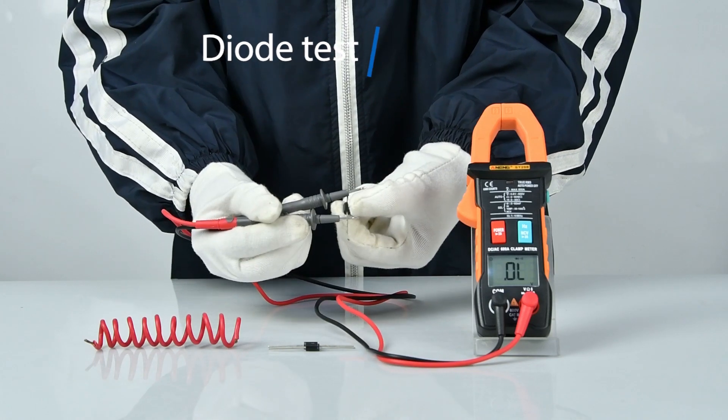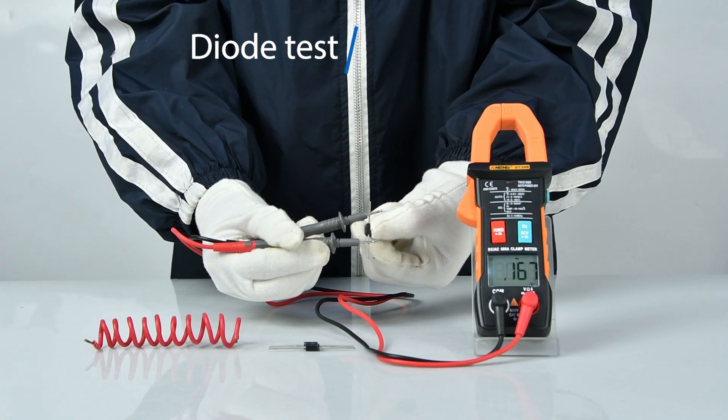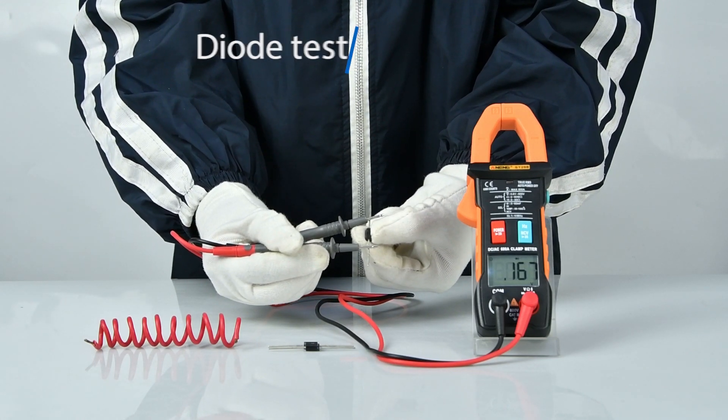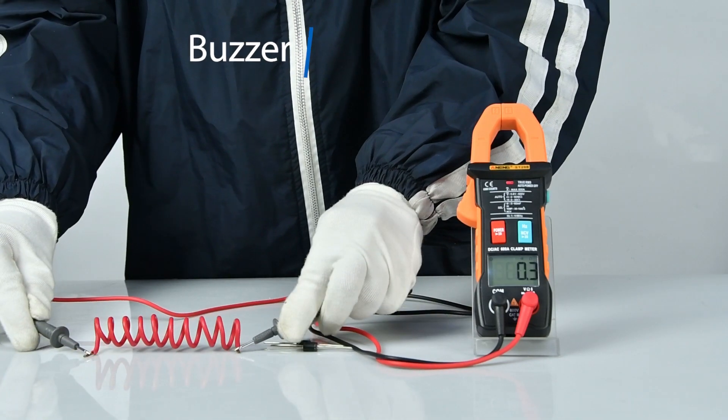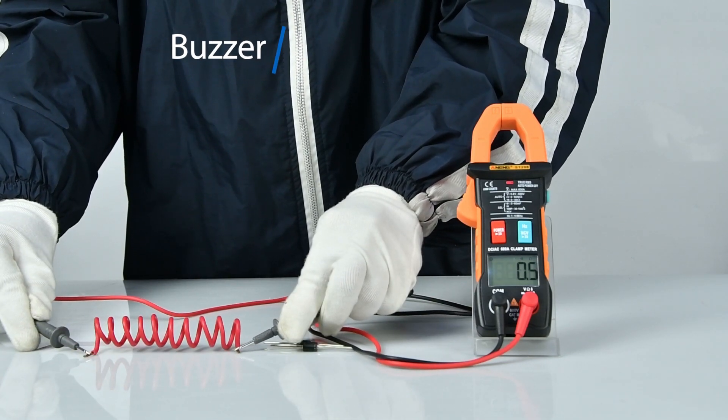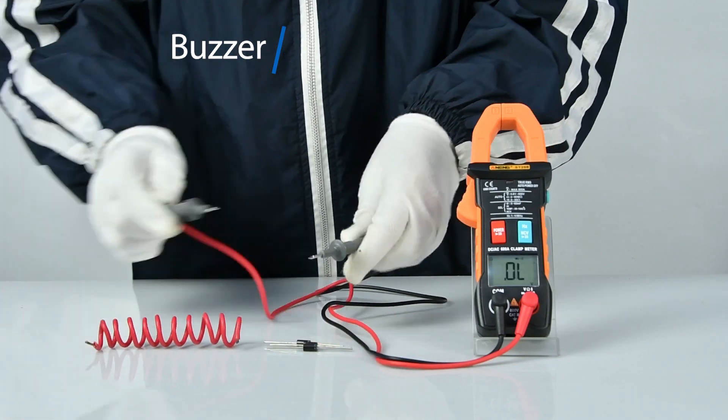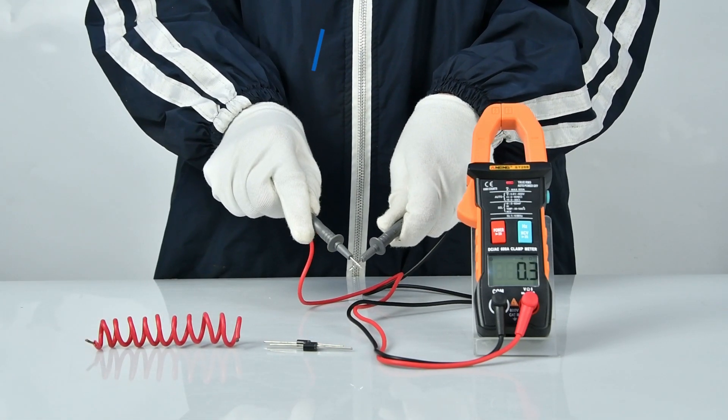Diode measurement: positive and negative poles need to be aligned. Continuity detector to detect whether the line is on or off.